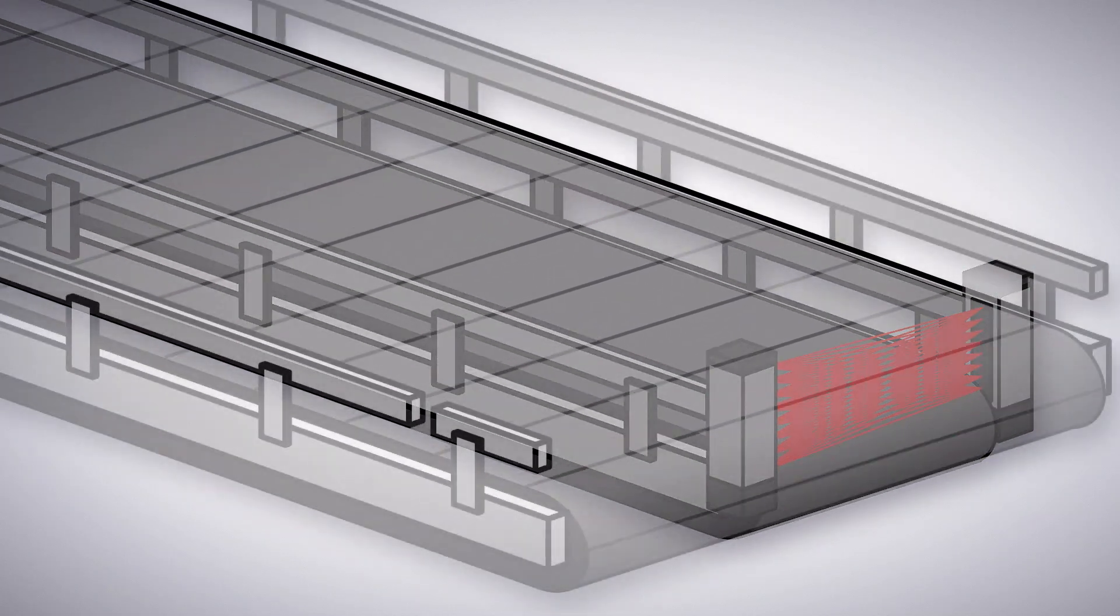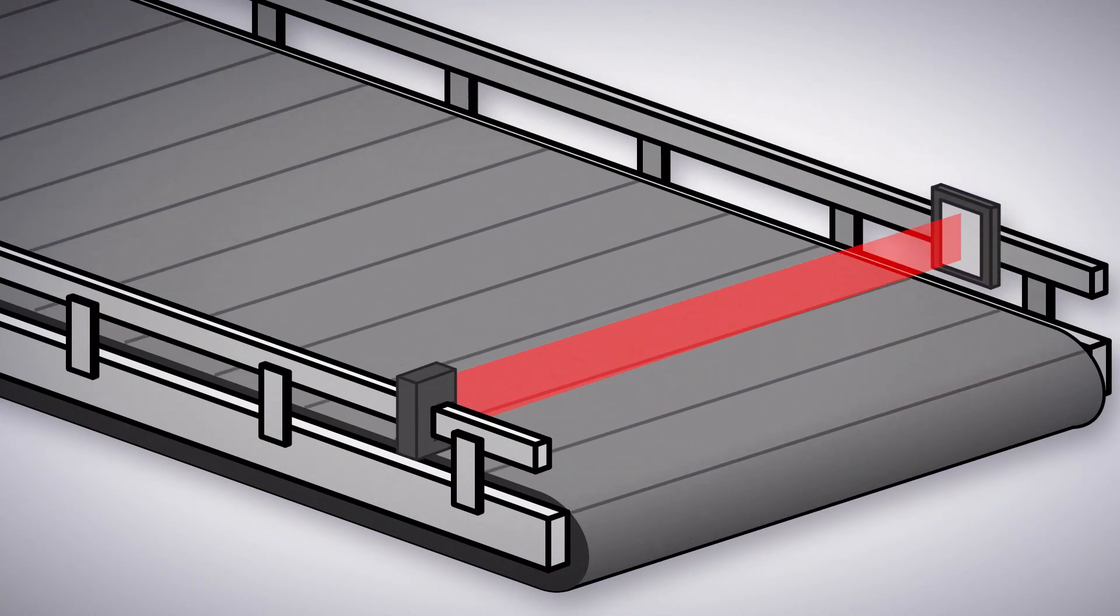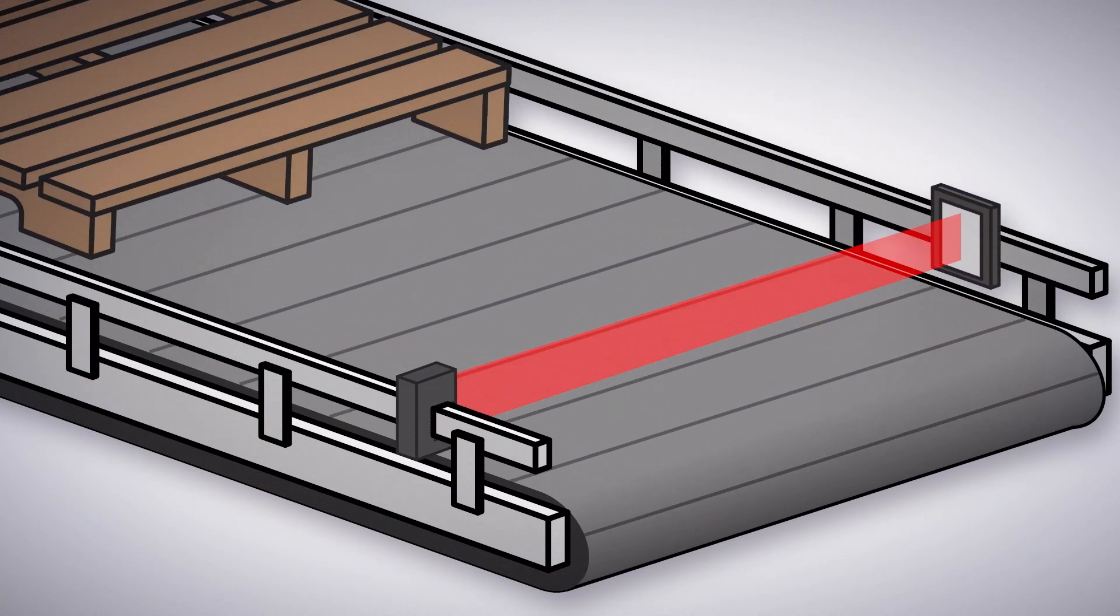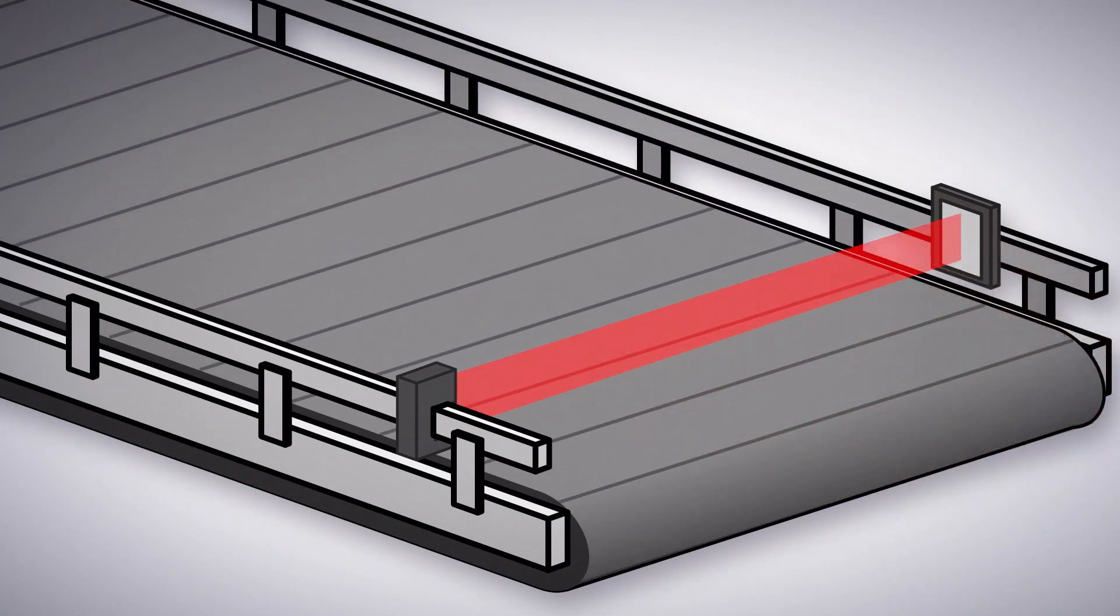For items with inconsistent edges or gaps, a wide beam Q76 sensor makes sure the item is properly detected. Pallets with inconsistent edges only need to break the beam in one spot to be detected.